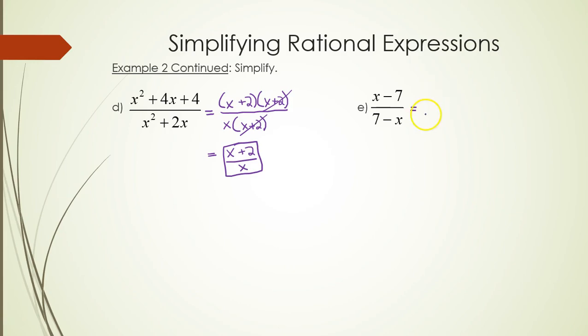Part E, the top and bottom look the same except on the top, x is positive. On the bottom, x is negative. On the top, 7 is negative. On the bottom, 7 is positive. The signs are flipped.